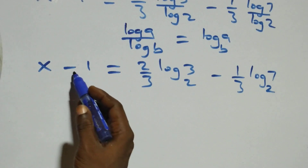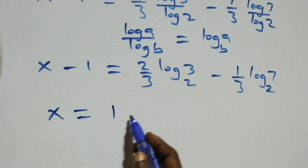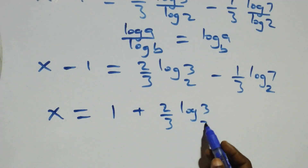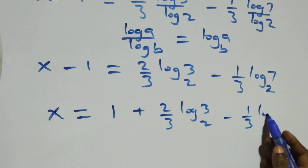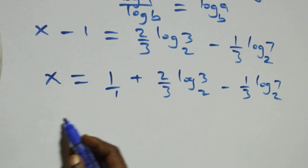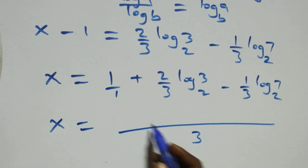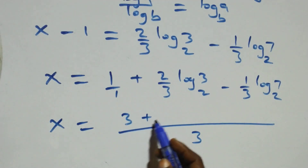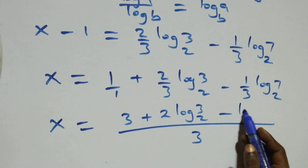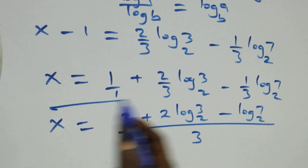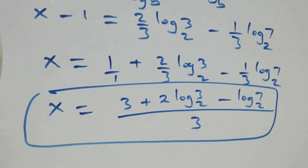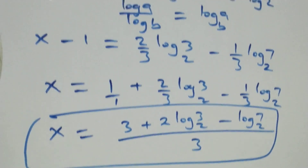Taking minus one to the other side, it becomes plus one. We have x equals 1 plus 2 over 3 log 3 base 2 minus 1 over 3 log 7 base 2. Bringing this together as one fraction with denominator 3, we get x equals 3 plus 2 log 3 base 2 minus log 7 base 2, all over 3. This is the value of x.